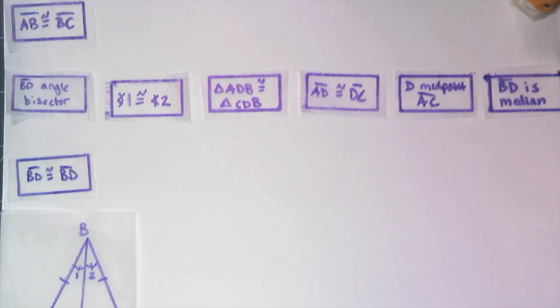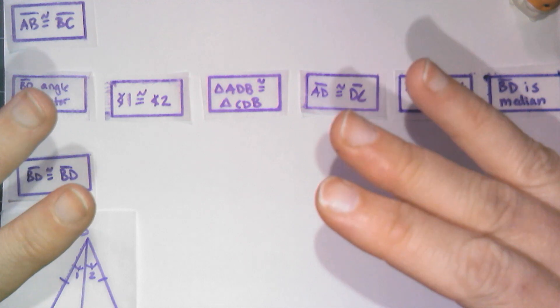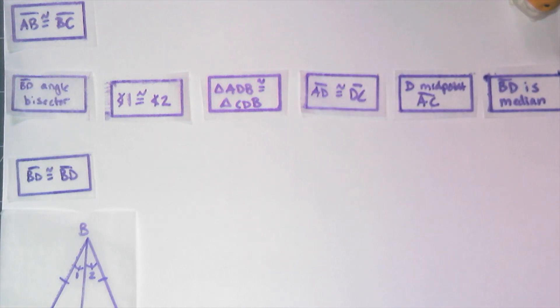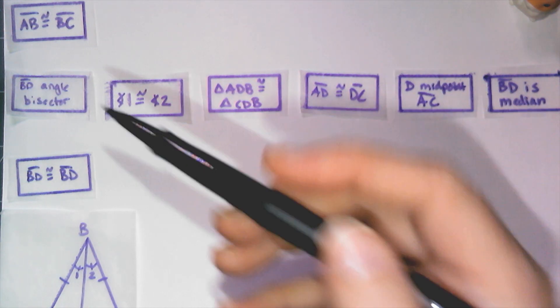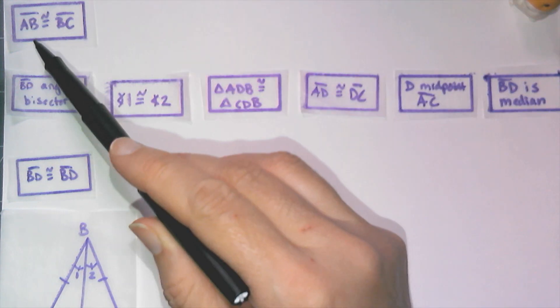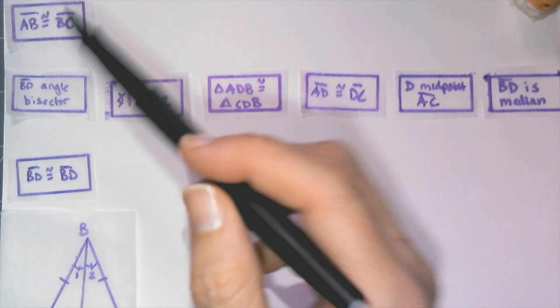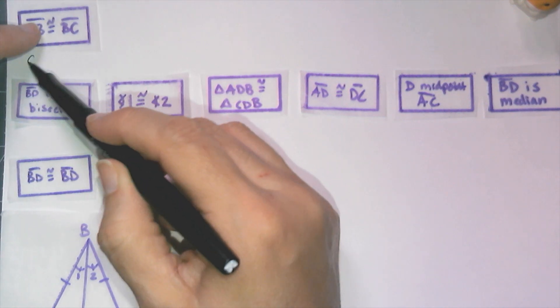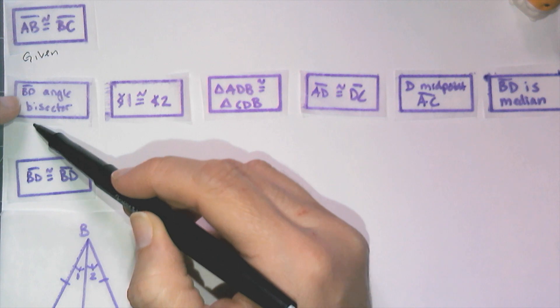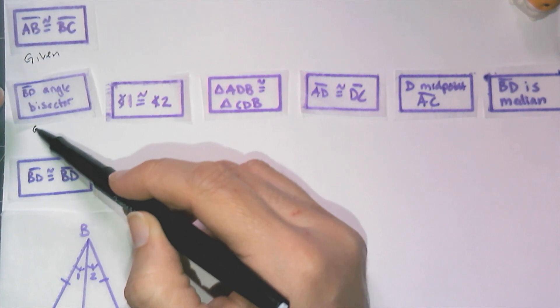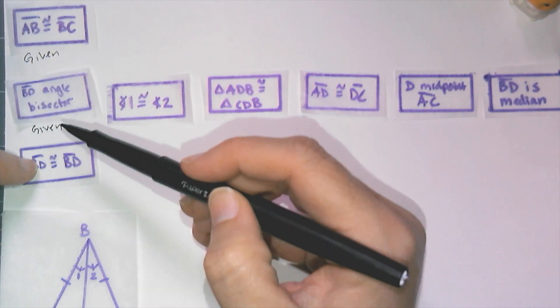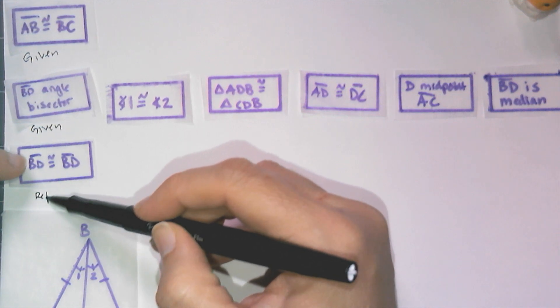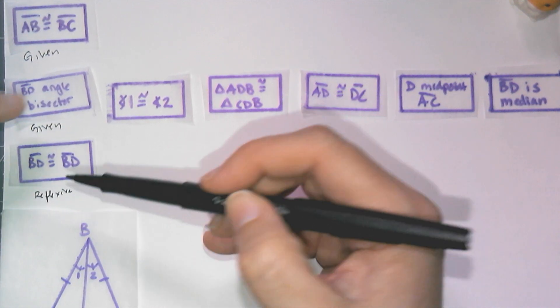All right. So now that I figured out the way my argument is going to flow, it's time to turn this into a proper flowchart, and turn that flowchart into an actual proof. So in order to do that, I got to add my arrows. So I have AB and my reasons. AB is congruent to BC. This was given. And BD was an angle bisector, was also given. And BD is congruent to BD was reflexive. So now I'm going to put my arrows in.